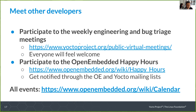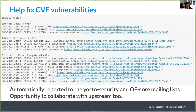Other things you can do to contribute: participate in the weekly engineering and bug triage meetings. Everyone will feel welcome — when newcomers are there, we are happy to have them and curious about who they are, even if they are not yet active developers. You can also participate in the OpenEmbedded Happy Hours — a friendly event where people can chat and it strengthens the sense of belonging in the community. All events are referred to in the wiki.